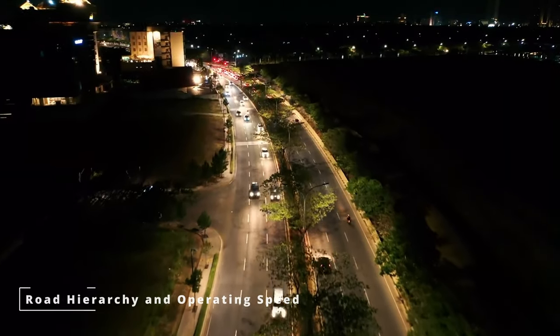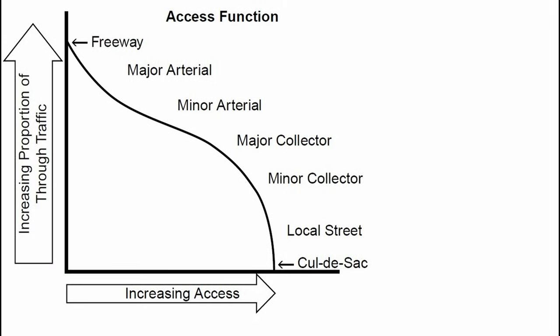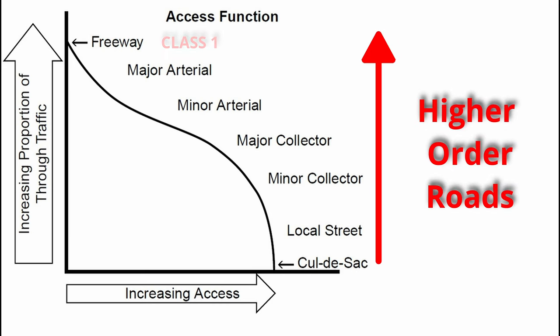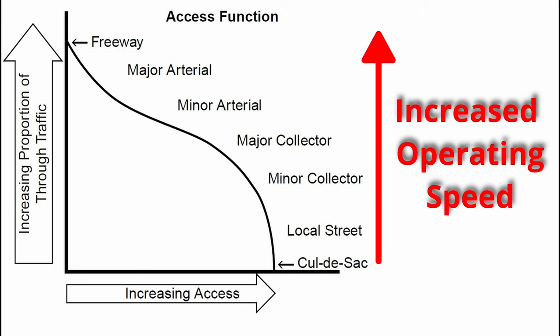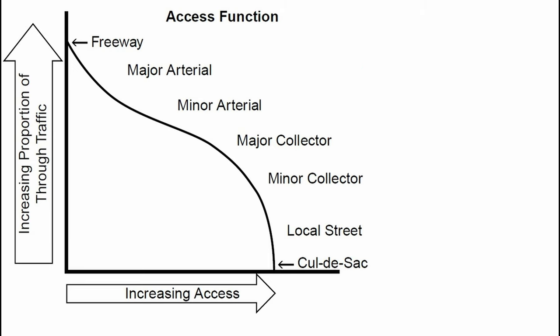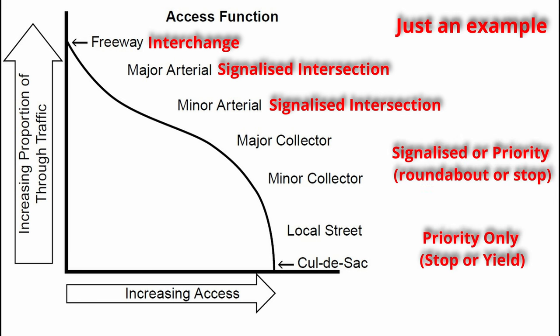Number six: road hierarchy and operating speed. This aspect goes hand in hand with access spacing, as access spacing is governed by road classification — highways versus local streets. You will only in rare cases find a roundabout on a high-speed roadway, because the very nature of a roundabout is traffic calming, and a highway encourages mobility over local access. Depending on the type of road, one intersection type is more suited than another, and some types are simply not allowed due to regulations.